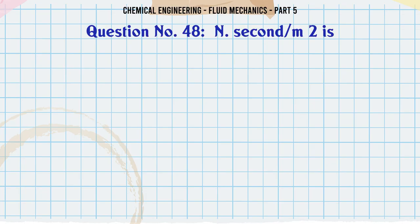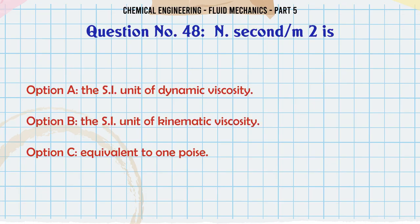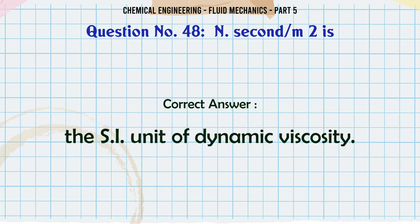Newton second per meter squared is: a) SI unit of dynamic viscosity, b) the SI unit of kinematic viscosity, c) equivalent to one poise, d) equivalent to one stoke. The correct answer is the SI unit of dynamic viscosity.